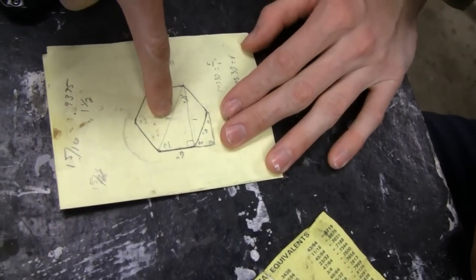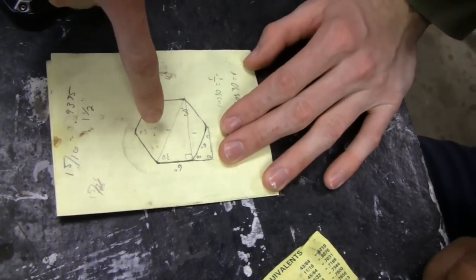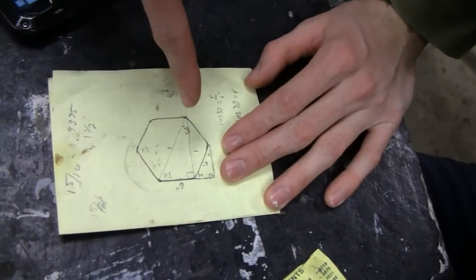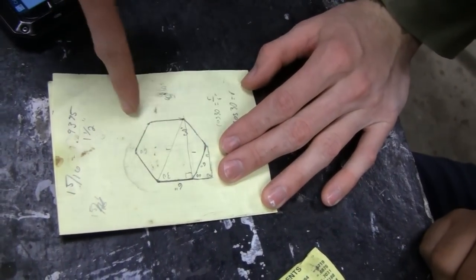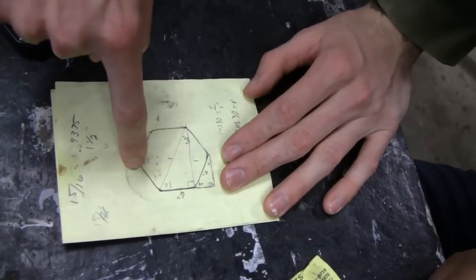So you know that the radius is twice one of the sides, alright? The way you know that is if you divided this into six equilateral triangles.